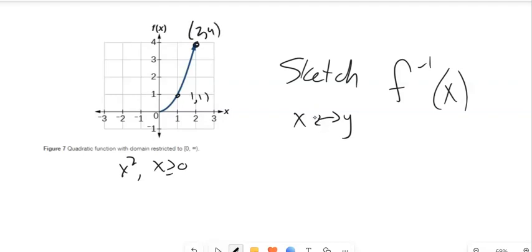If the input and the output switch, 2.4, the inverse of it would be 4.2. So that would be about here. Still 1.1. Still 0.0. So this is what the inverse of this should look like.